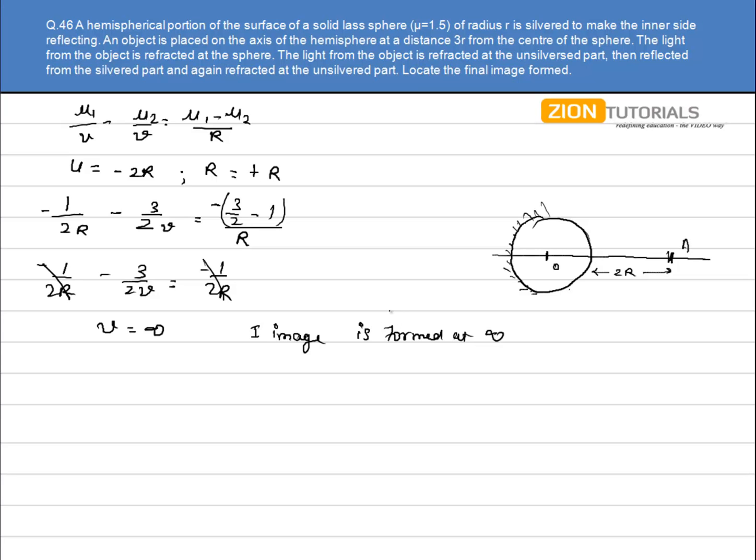Now this image will act as an object for the reflecting surface. Since object is at infinity for the reflecting surface, the image will form at focal length that is equal to r/2, and that is over here.